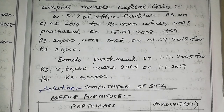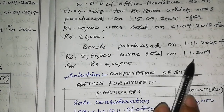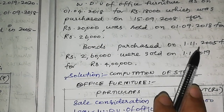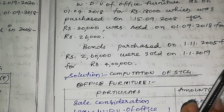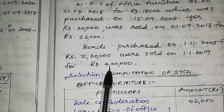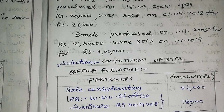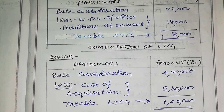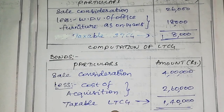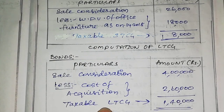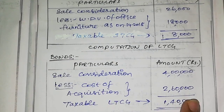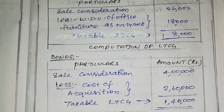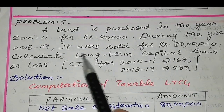There is also a bond purchased on 1st November 2005 for Rs. 2,60,000, sold on 1st September 2019 for Rs. 4,00,000. For a financial asset like bonds, if held for less than 12 months it is short-term; if above 12 months it is long-term. From 2005 to 2019, it is obviously long-term. However, for bonds — debentures — even though it is long-term capital gain, indexation is not applicable. So cost of acquisition is Rs. 2,60,000 and taxable long-term capital gain is Rs. 1,40,000.